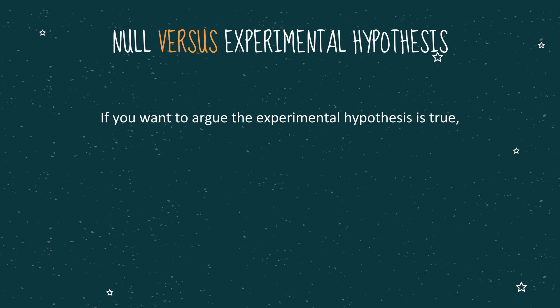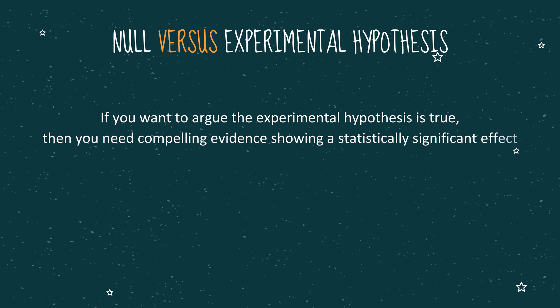If you want to argue that there's a correlation between two variables, or perhaps that your treatment group differs from the control group, then you need compelling evidence to reject the null hypothesis. We want to be really, really sure, and only reject the null hypothesis if there's a statistically significant effect. And that's the null hypothesis in a nutshell.